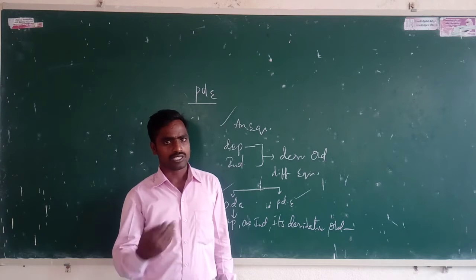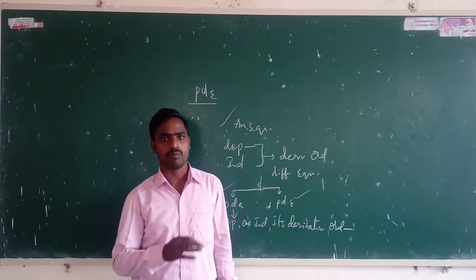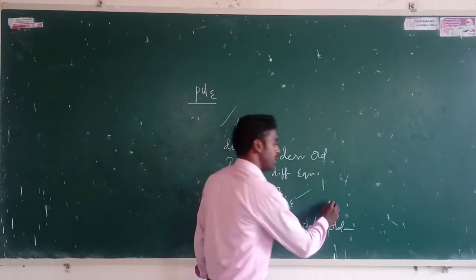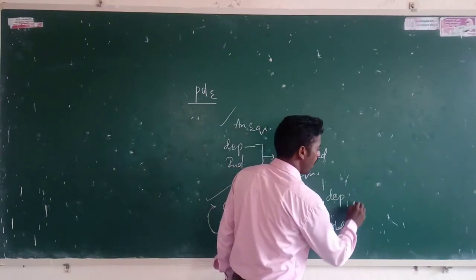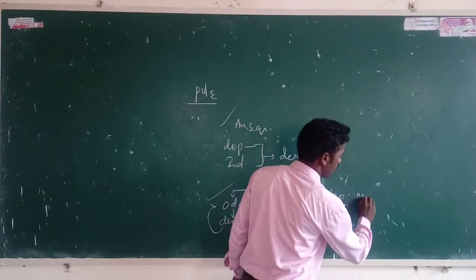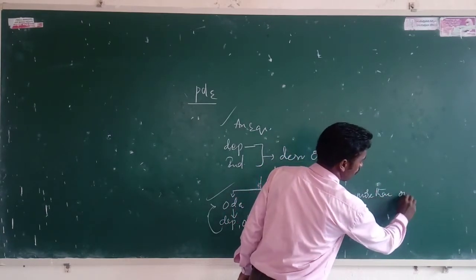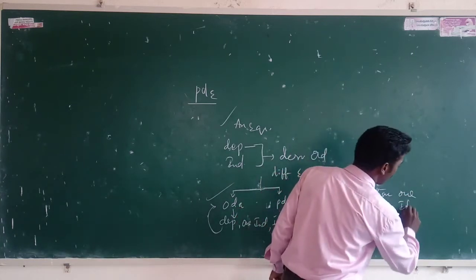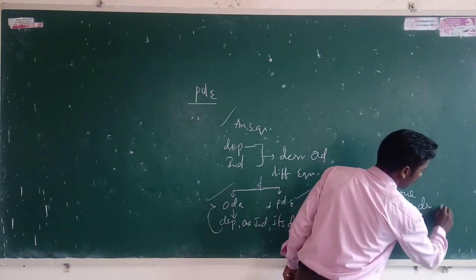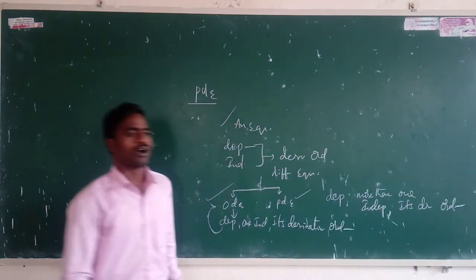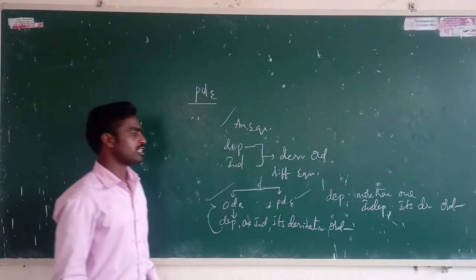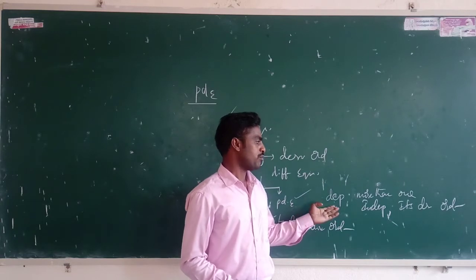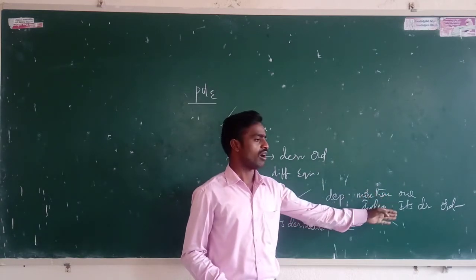The next one is a partial differential equation. A differential equation is called a partial differential equation if it involves a dependent variable and more than one independent variable, and it contains partial derivatives. So a differential equation with more than one independent variable and partial derivatives is called a partial differential equation.